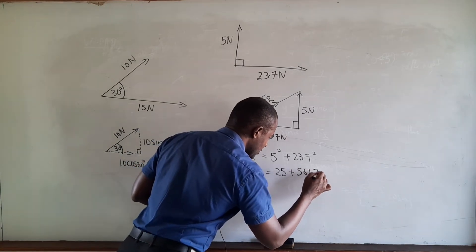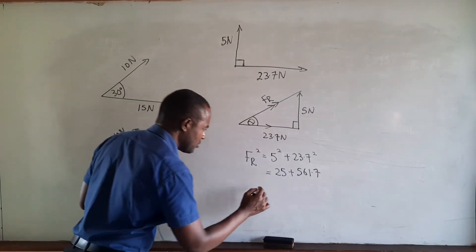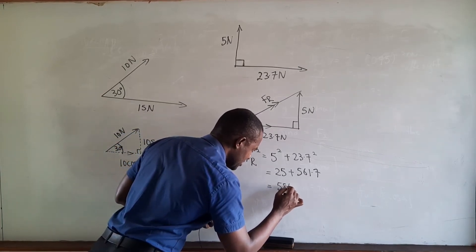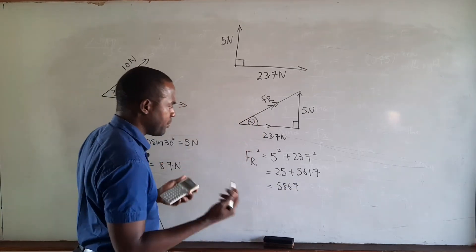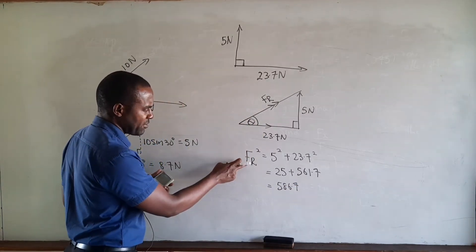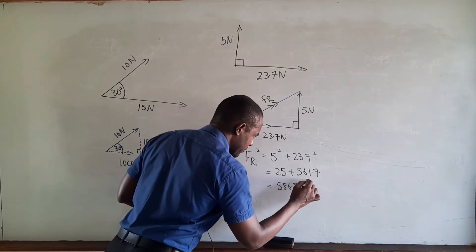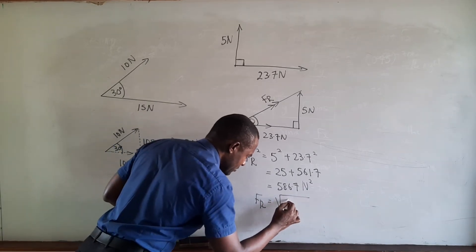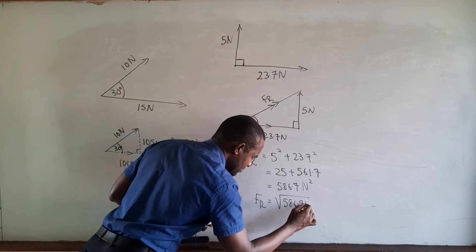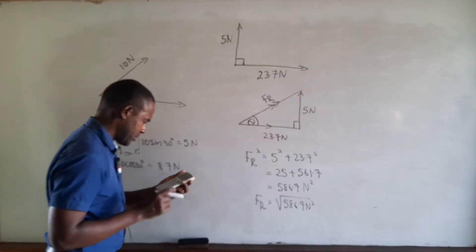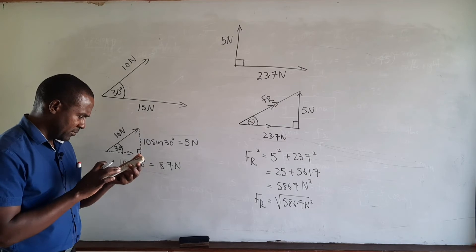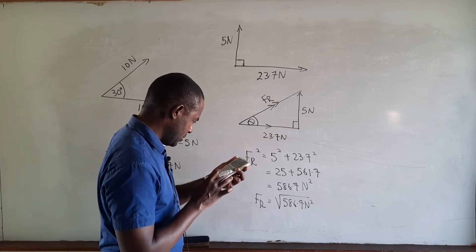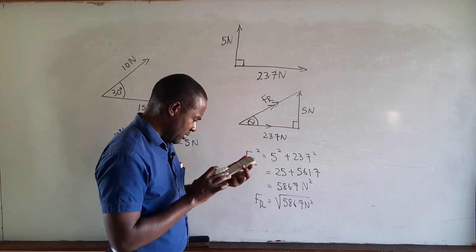So 5 squared is 25, and 23.7 squared is 561.7, giving us FR squared equal to 586.7 Newton squared. Therefore FR equals the square root of 586.7 Newton squared.